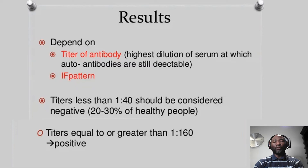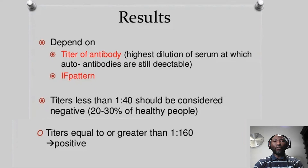Generally, any titer less than one in 160 is regarded as normal. Titers of one in 40 can be present in about 30% of individuals; one in 80 in about 13 to 15% of healthy individuals; one in 160 in about 5% of healthy individuals; and one in 320 in about 3% of healthy individuals. Any titer over one in 160 is regarded as positive. The more the dilutions, the stronger the titer — so titers of one in 1600 are regarded as strongly positive, whilst titers between one in 160 and one in 1600 would be regarded as moderately positive.